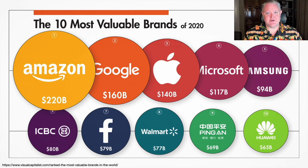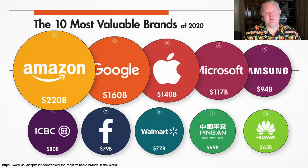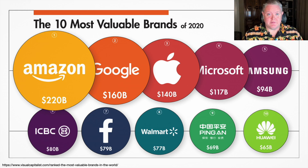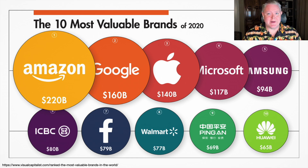Circles or bubbles really work well when you've got pretty large differences in the values in the data set that you're working with. The second issue is that when you do have a difference, it's still hard for humans to determine how big that difference is when you're visualizing with circles.